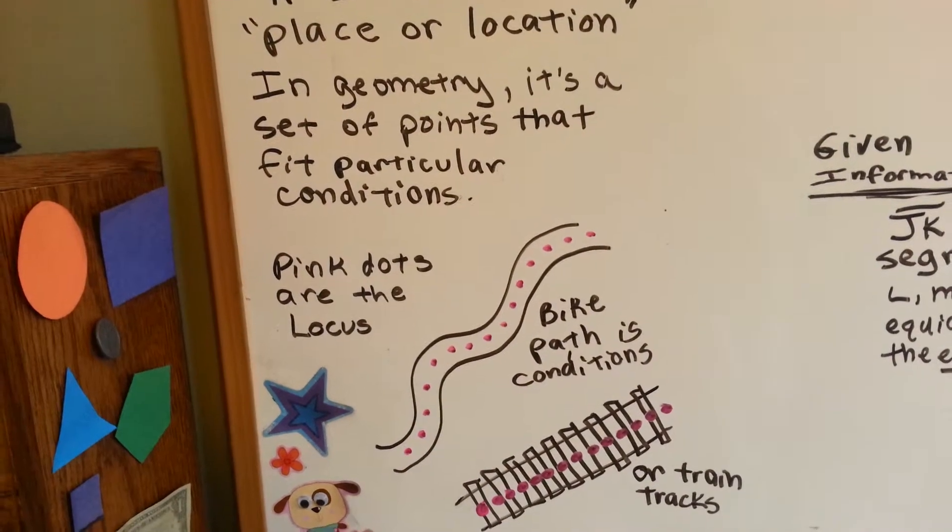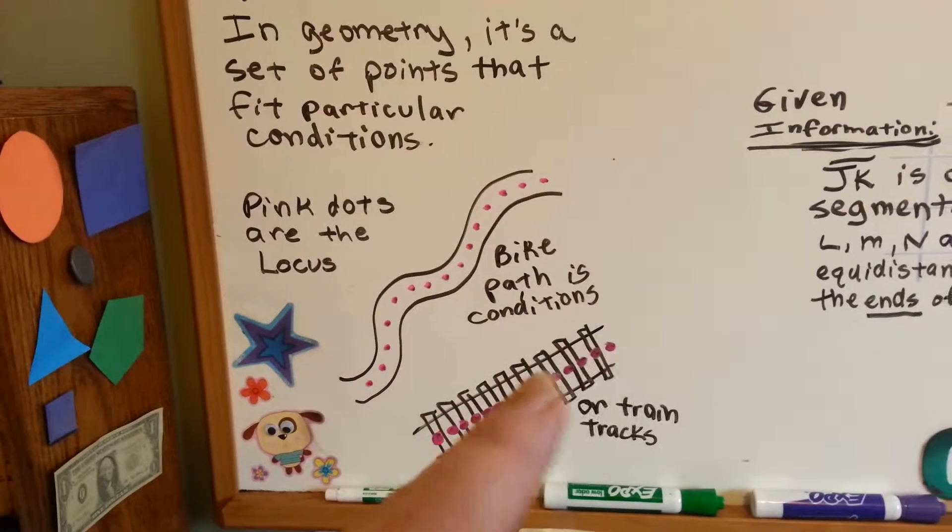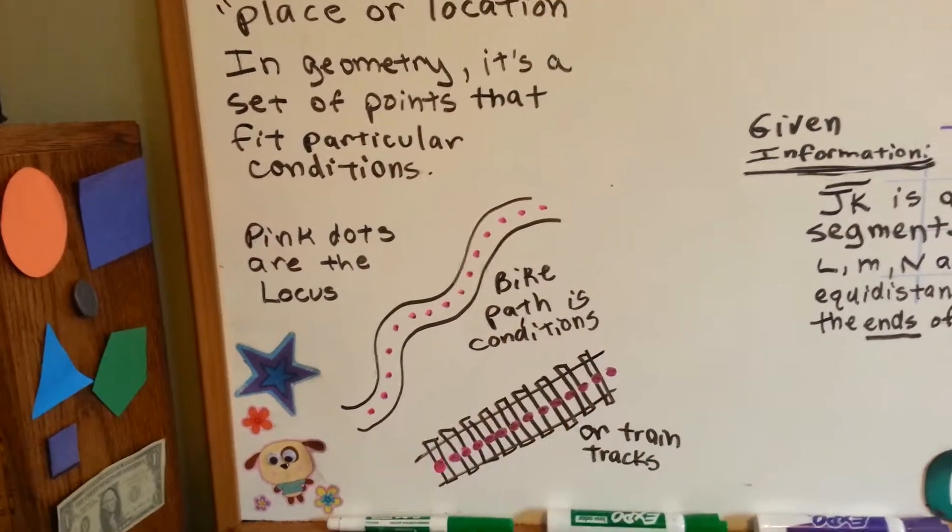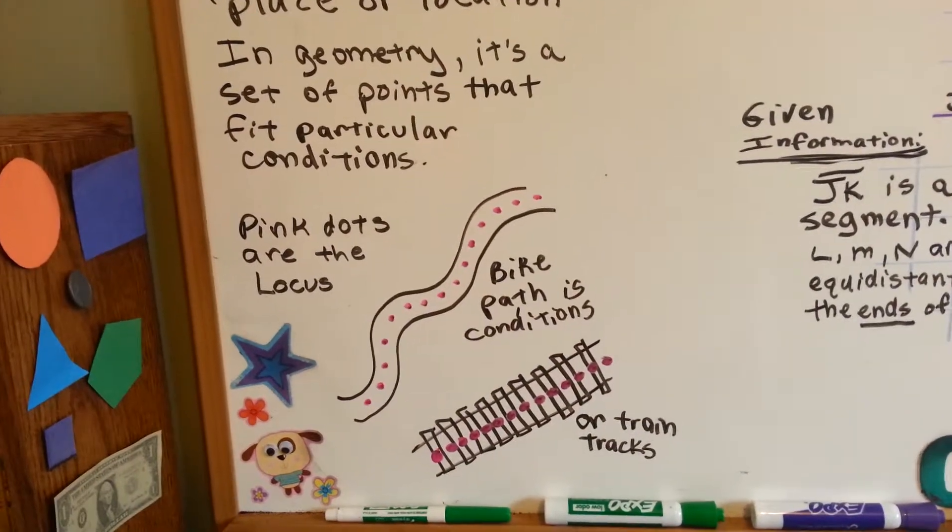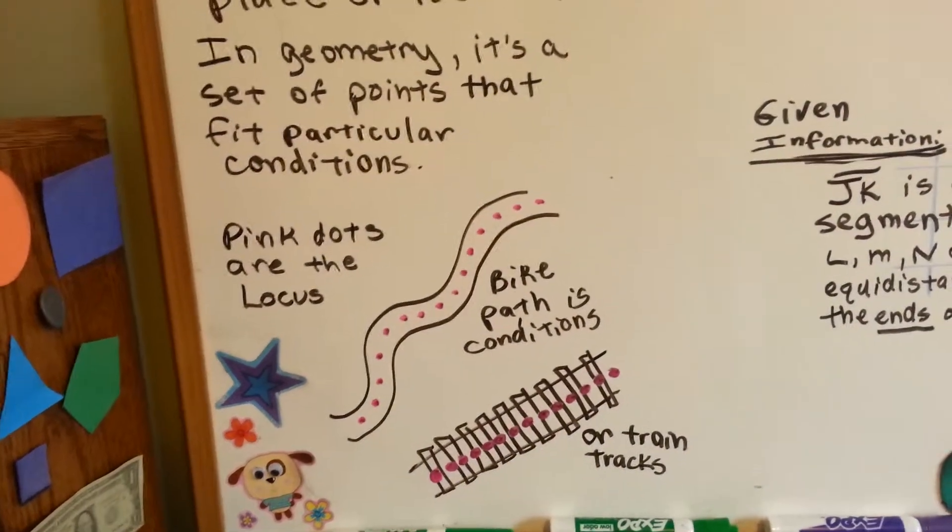It's the set of points that fit those conditions. It could also be points on train tracks. The train has to stay on the train tracks, and if the set of points are there, it has to go that way. Those are the conditions, and that's how the dots fit those conditions.